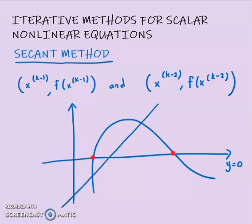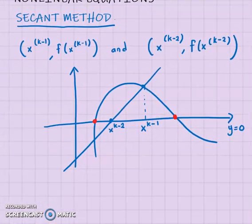The secant method uses two lines through two x values: x_{k-1} and x_{k-2}. Based on these two values, you use the secant formula to get closer to the root. The first iteration may not be very close, and the second iteration gets closer again, depending on the iteration you're on.